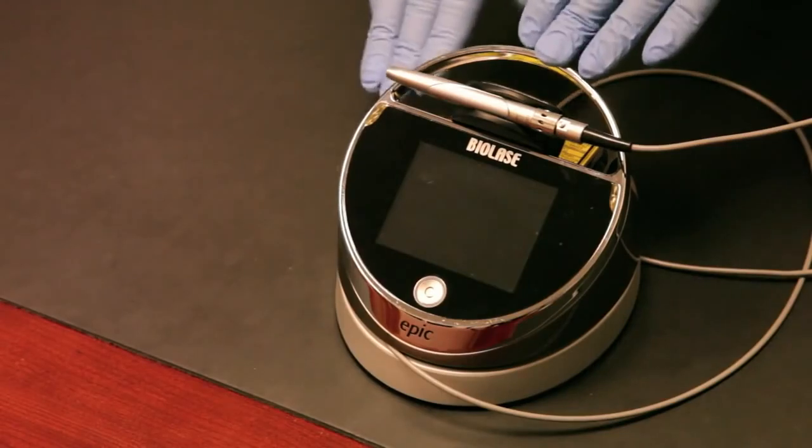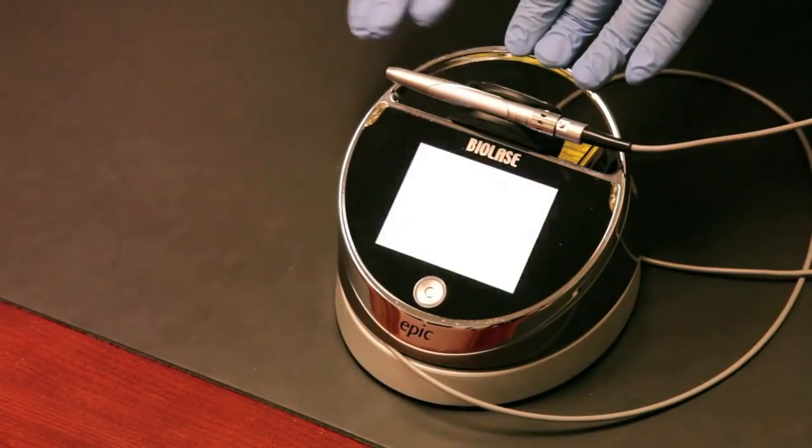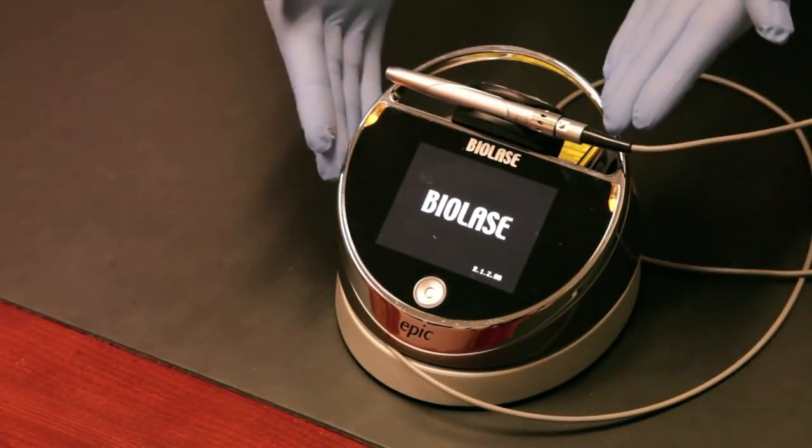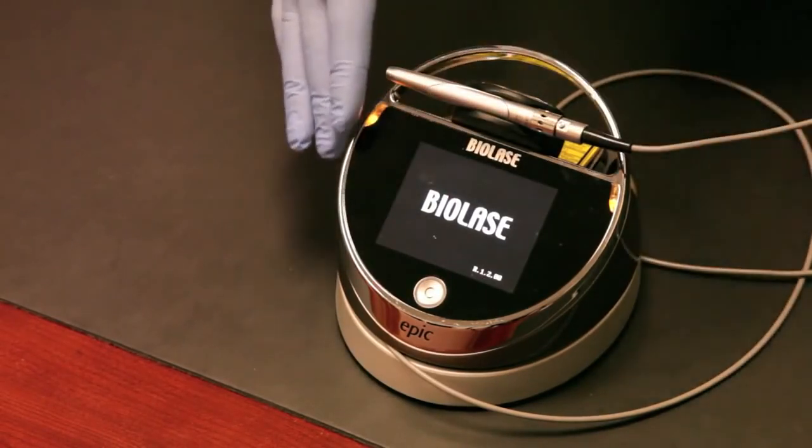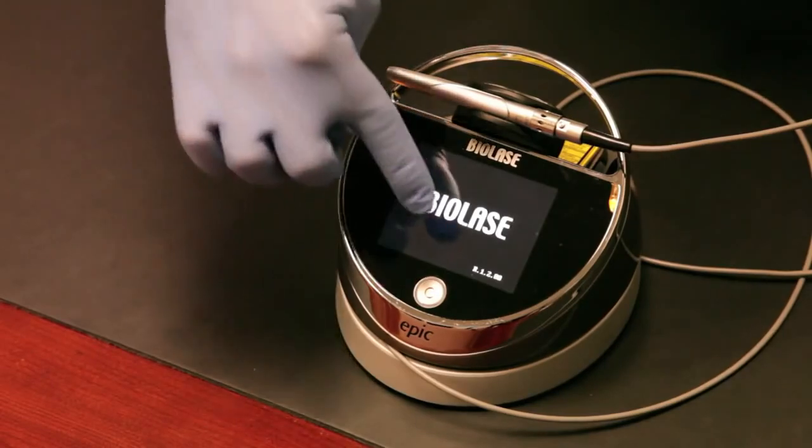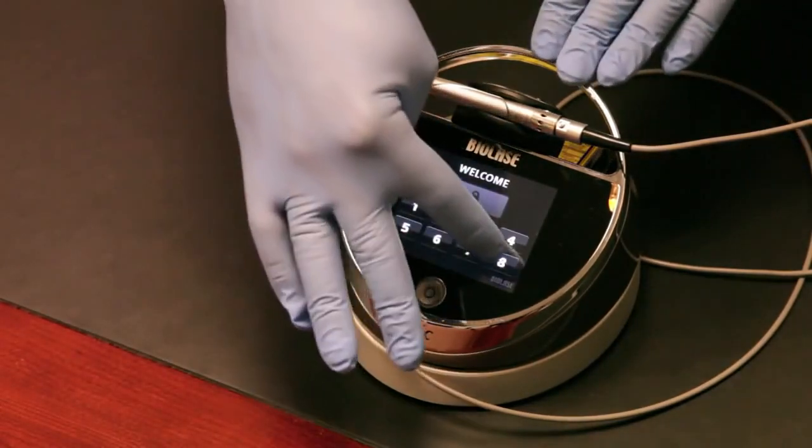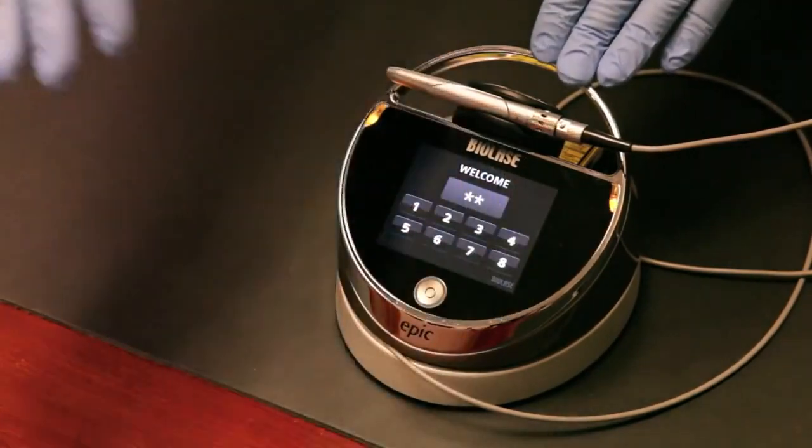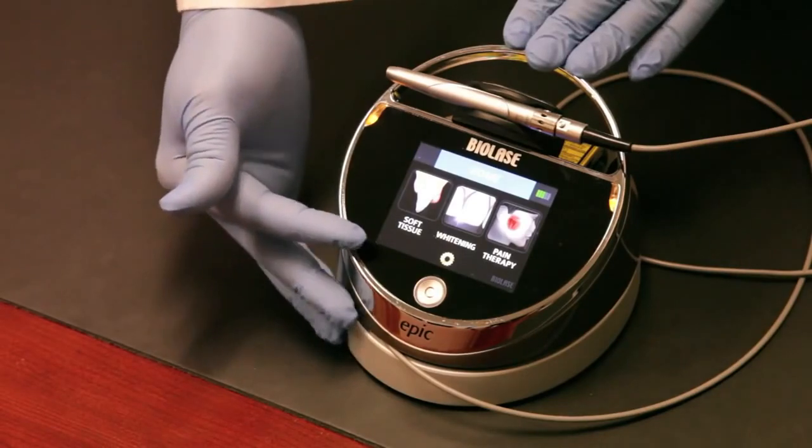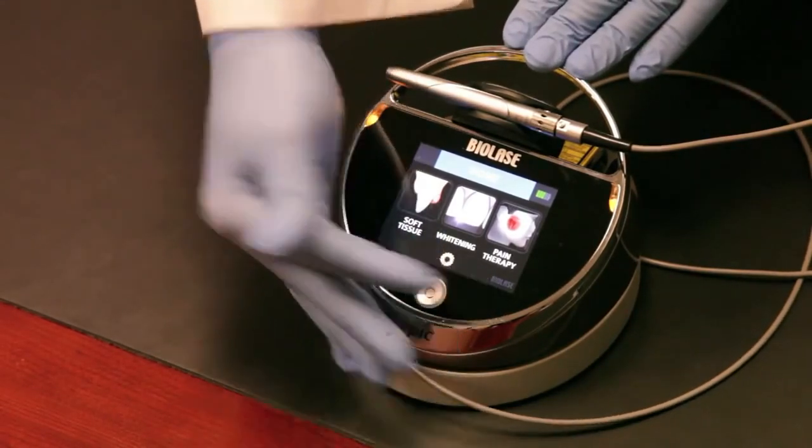Our next step is to look at the user interface itself. So we'll power the laser on and we're going to look through some of the user interface commands. You'll see really how beautiful and elegant the user interface is and how simple it will be for you to put to use in a clinical setting. The laser power is up, you'll get a welcome screen that looks like this. You simply touch it, you enter the password, which is the same for every Epic. It's 888. One more. There you go. And there's your user interface. Remember, you have three treatment centers. You have a soft tissue treatment center, a whitening system, and then a pain therapy treatment center.